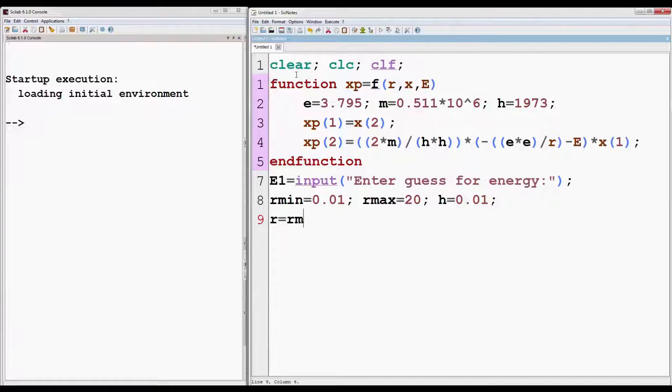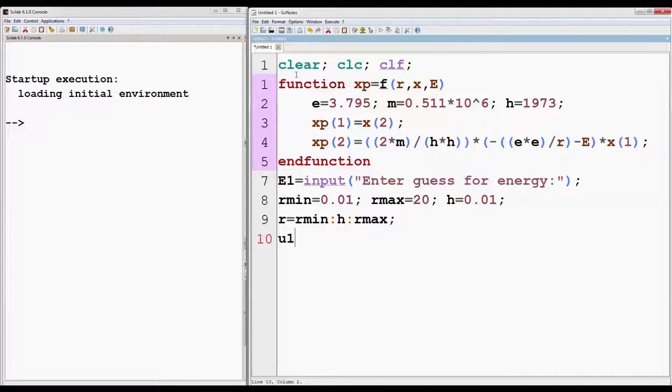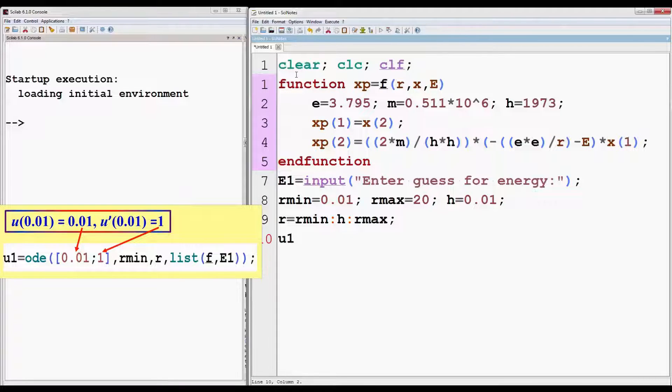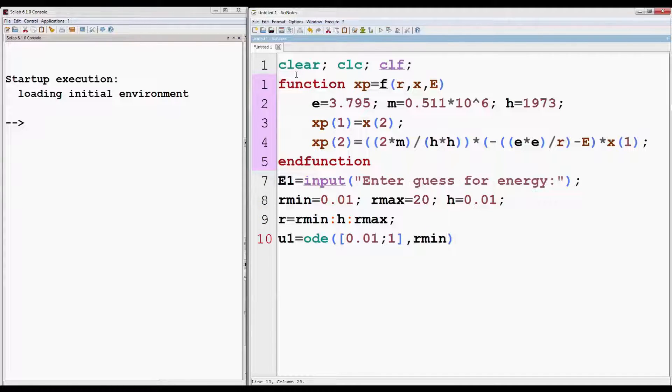Next, we have to set the range of r for which we are going to solve differential equation. r min cannot be zero since Coulomb potential will become infinite at that point. So it's set to 0.01. r max is 20 and step size h is set to 0.01. So r will vary from r min to r max with h as step size.